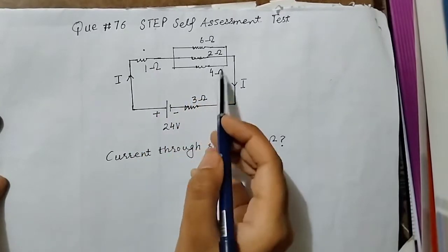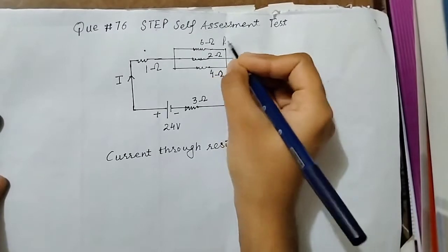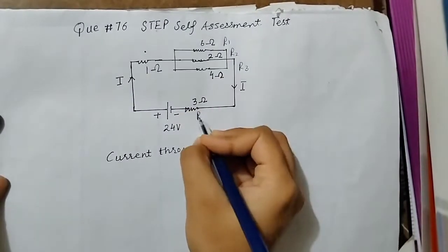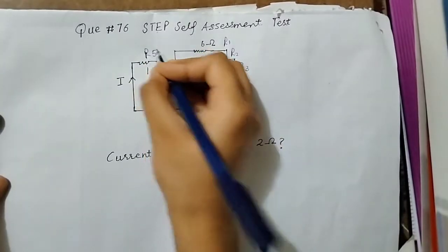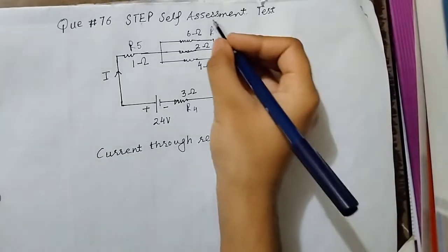1 ohm, 6, 2, 4 ohm and 3 ohm. If I label them R1, R2, R3, R4 and R5, we have to find the current through R2. Now what do we need to do?